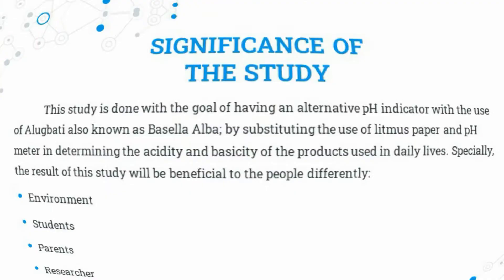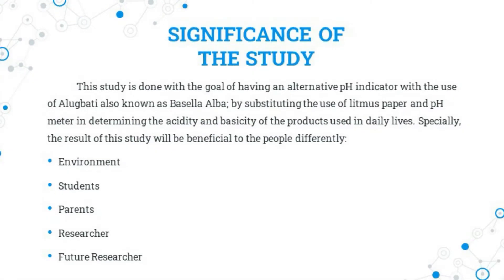This study is done with the goal of having an alternative pH indicator with the use of alugbati, also known as Basella alba, by substituting the use of litmus paper and pH meter in determining the acidity and basicity of products used in our daily lives. The results of this study will be beneficial to people in different ways.